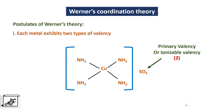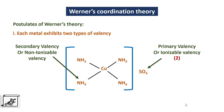It is called as ionizable valency because if this compound is dissolved in water, the sulfate group can be detected in the semi-micro qualitative analysis. The second valency is called as secondary valency or non-ionizable valency. There are 4 copper-ammonia bonds, therefore the secondary valency is 4. This is called as non-ionizable valency because if this compound is dissolved in water, in semi-micro qualitative analysis, there will be no test for ammonia.